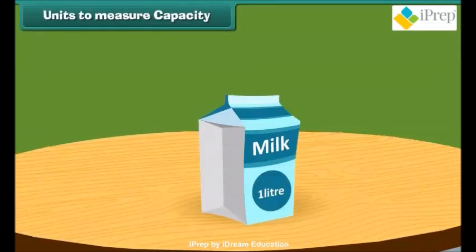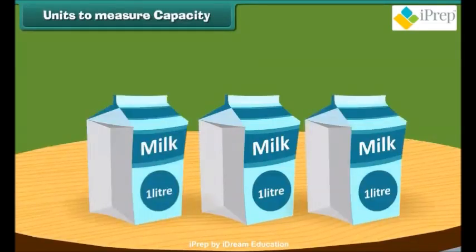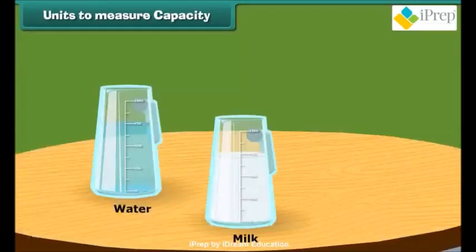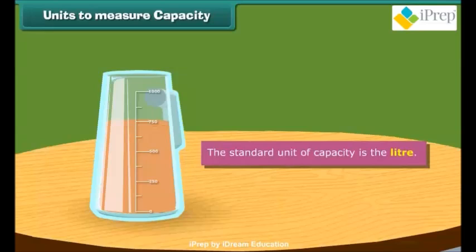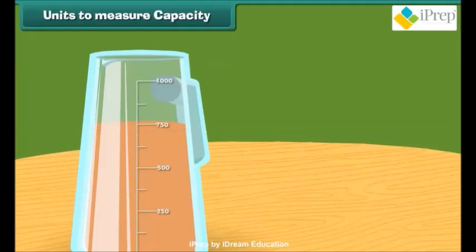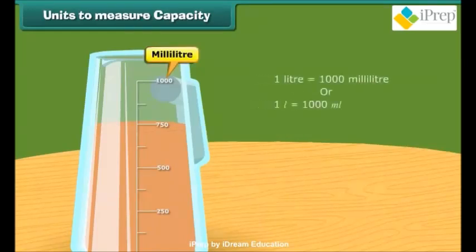How much milk comes in your home daily? 1 liter, 2 liters or more. The capacity of liquids like water, milk, juice is measured in terms of liters or milliliters. The standard unit of capacity is the liter. The part obtained by dividing 1 liter into 1000 equal parts is called a millilitre. This means that 1 liter is equal to 1000 milliliters.